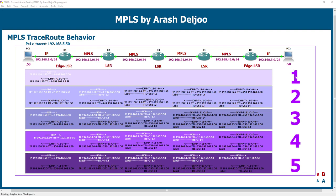In the first step, PC1 generates and sends a UDP packet to an unused port. The source IP is PC1's address 192.168.1.50, and it uses TTL=1 because this is the first packet of traceroute and it wants to discover the first router or default gateway. The destination is 192.168.5.50, the IP of PC2, so it sends the packet with TTL=1.